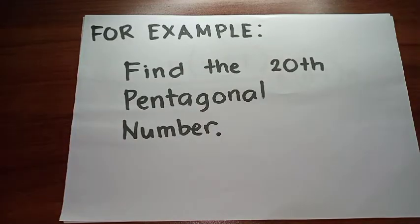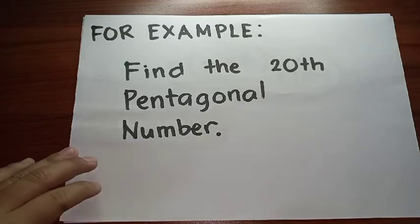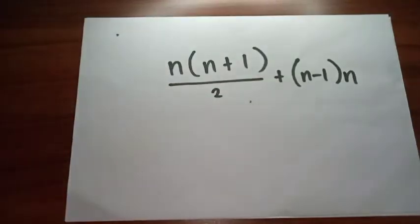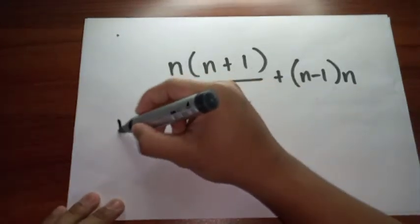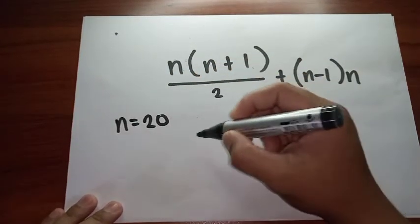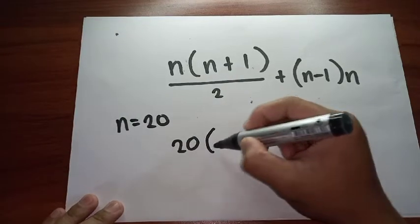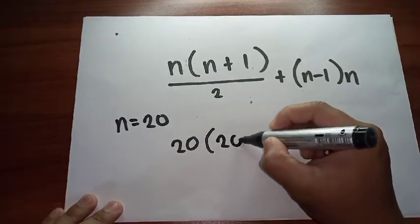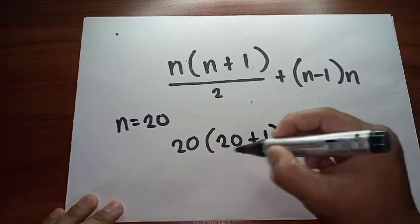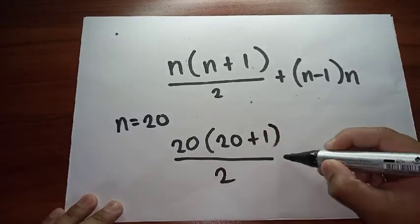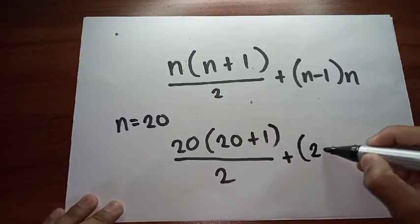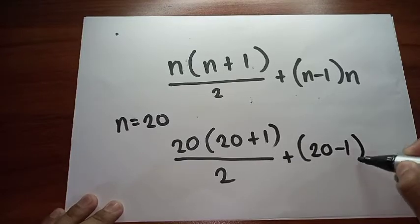For example, find the 20th pentagonal number. We are going to use the formula n times n plus 1 over 2 plus n minus 1 times n. Our n is 20, so 20 times 20 plus 1 over 2 plus 20 minus 1 times 20.